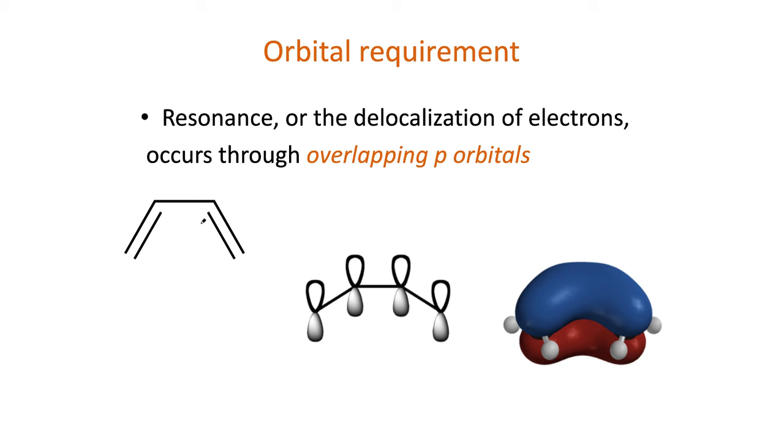Similarly, butadiene is shown as a line structure at the far left of this next slide. Although it looks like there are two separate double bonds, in fact the p orbitals overlap to form a conjugated or connected pi system through which electrons are delocalized.